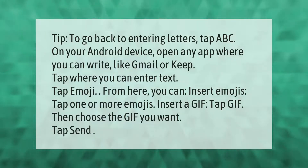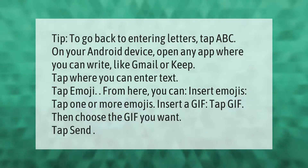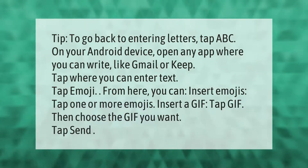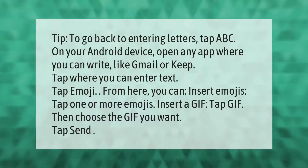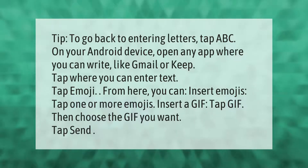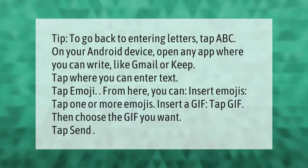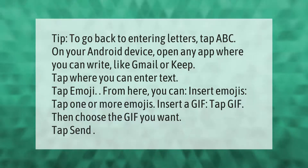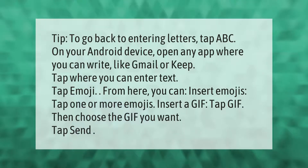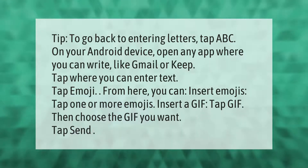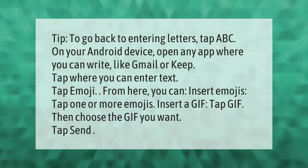To go back to entering letters, tap ABC on your Android device. Open any app where you can write, like Gmail or Keep. Tap where you can enter text, then tap emoji. From here you can insert emojis — tap one or more emojis. To insert a GIF, tap GIF, then choose the GIF you want and tap send.